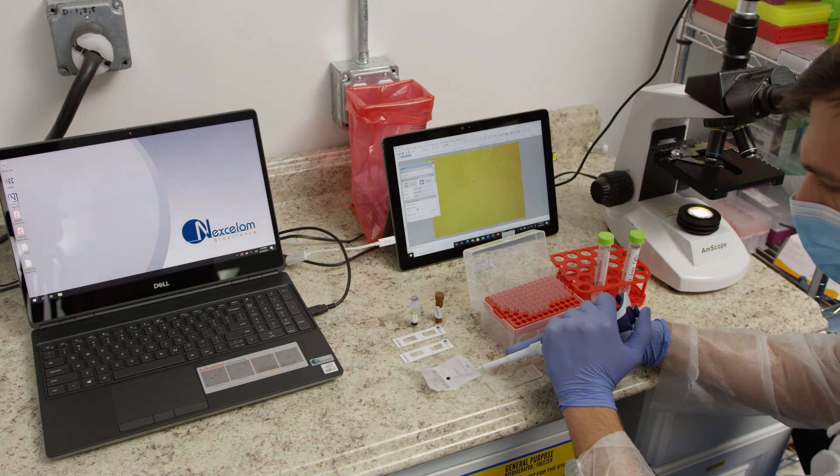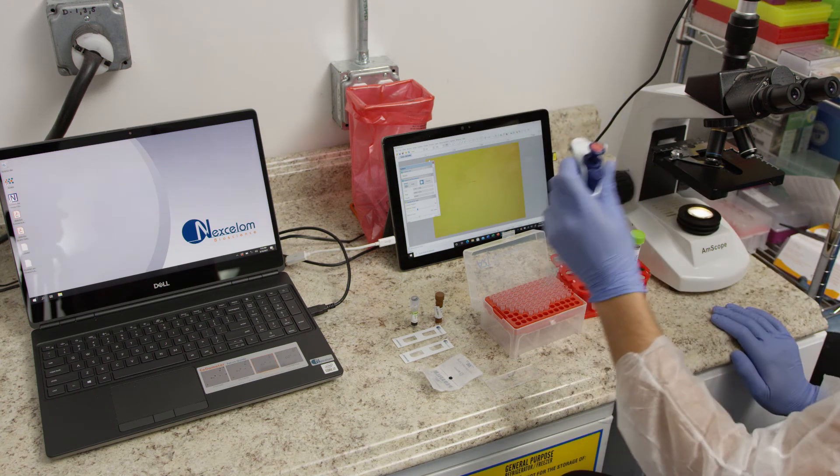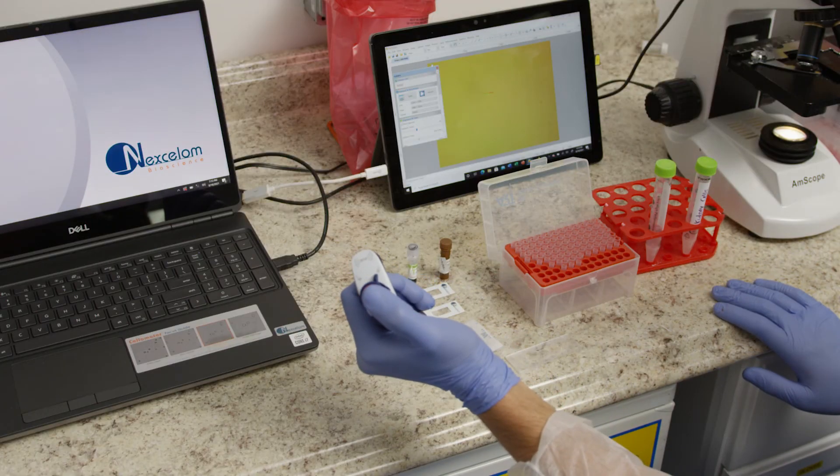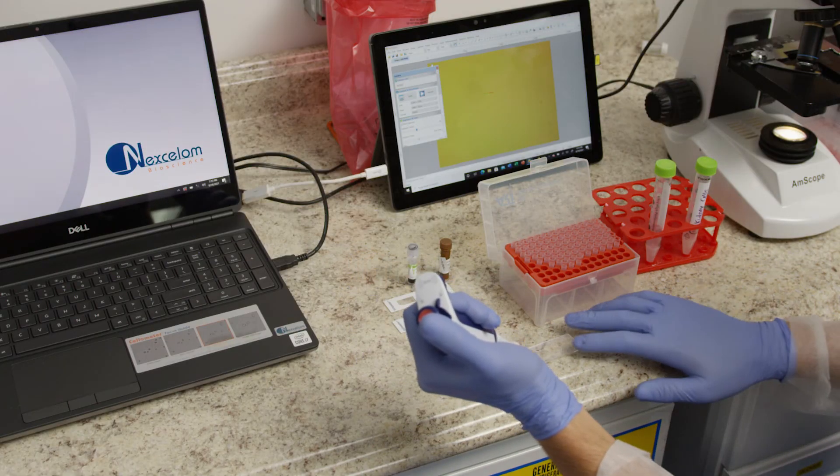For use of Trypan Blue, mix 20 microliters of Trypan Blue and 20 microliters of sample, then add 10 microliters to each side of an analysis slide for counting.